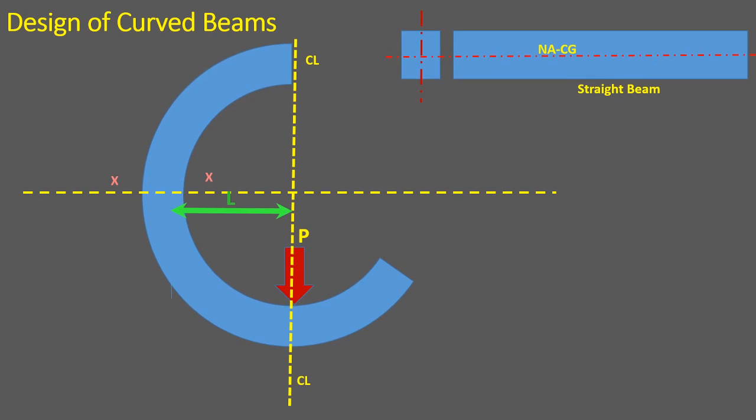In this video we will study how to design curved beams. A beam is a structural member whose length is large compared to its cross-sectional area. It is used to support load in the direction transverse to its axis.